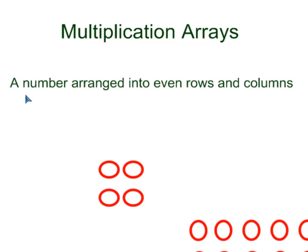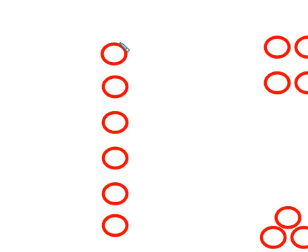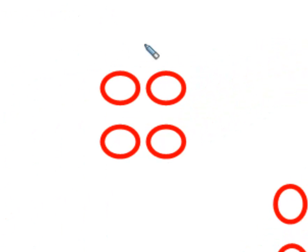An array is a number arranged into even rows and columns. So here I have a few examples. Let's take a look and see which ones are arrays and which are not. This number — 1, 2, 3, 4, 5, 6 — has been arranged into an even row and even columns, so this is an array. Over here, the number 4 has been arranged into even rows and columns. That is also an array.